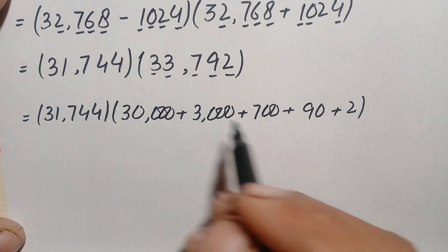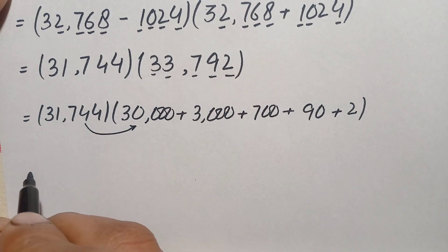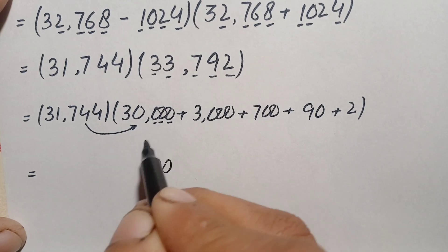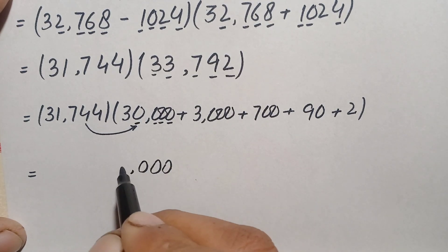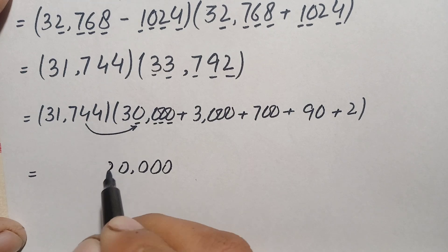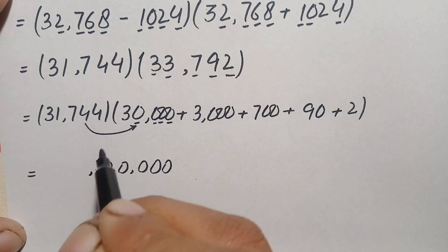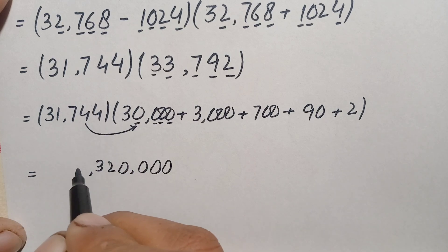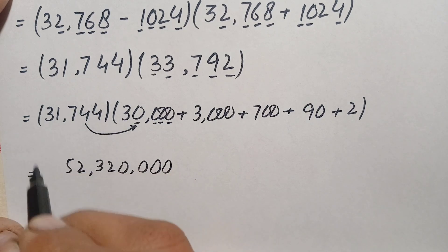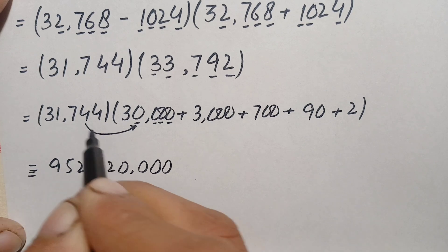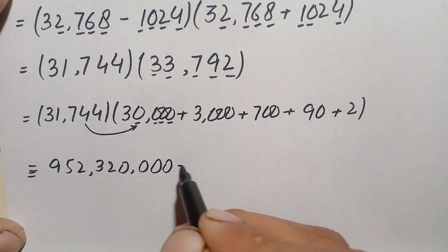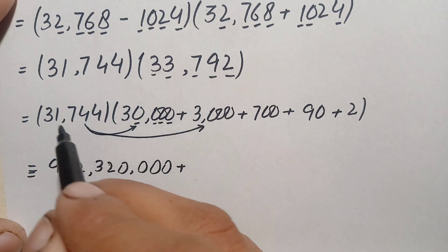Multiplying 31,744 by 30,000: 3 times 4 is 12, carry 1; 3 times 4 is 12 plus 1 is 13, carry 1; 3 times 7 is 21 plus 1 is 22, carry 2; 3 times 1 is 3 plus 2 is 5; 3 times 3 is 9. The product is 952,320,000.